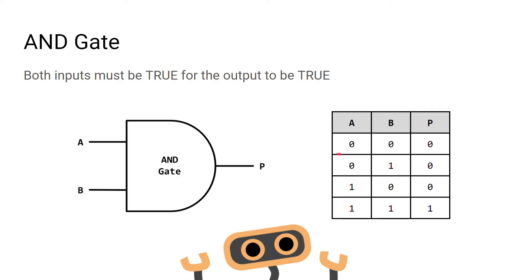All possible inputs and outputs are represented in a truth table. An electrical current is represented as 1 and no current as 0. In the first row, if A is 0 and B is 0, P, the output of the AND gate, will also be 0.